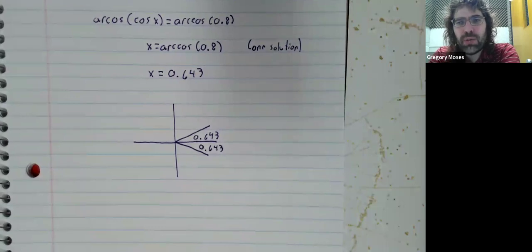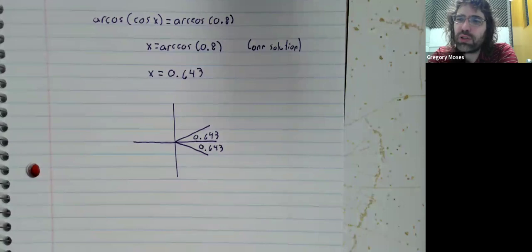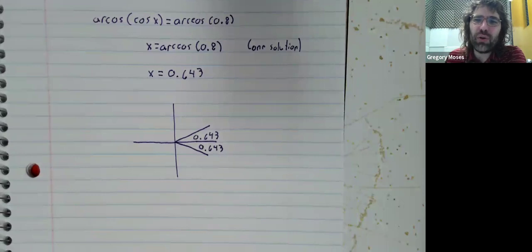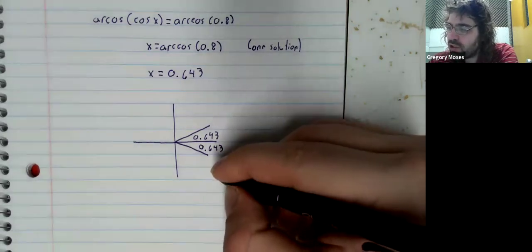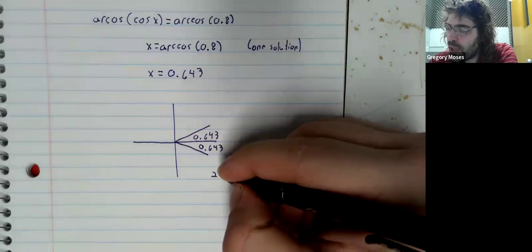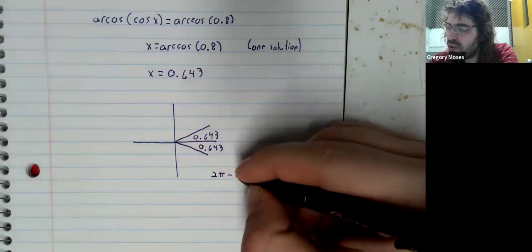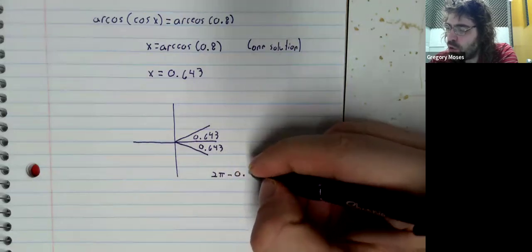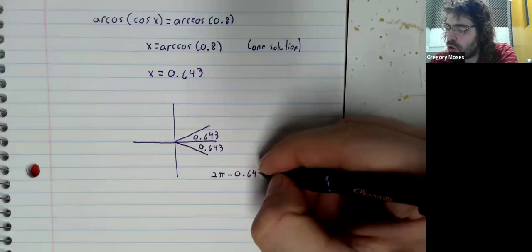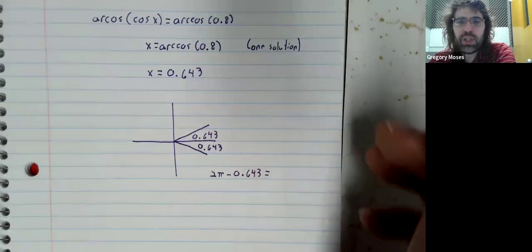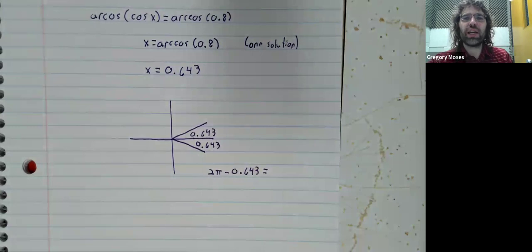And if you happen to remember, if not, this is a good time to review. But if you happen to remember how to find these reference angles, it's going to be 2 pi, in this case, minus 0.643. Let me plug that into a calculator.